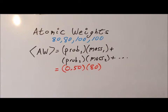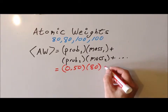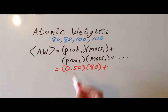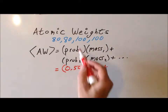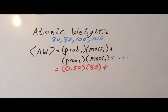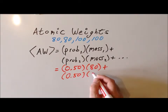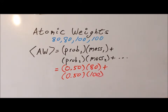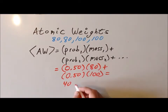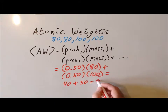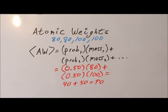Then we would continue this process to the second possible score. Our second possible score is 100. And the probability that a student in this particular exam scored a 100 is also 50%, so we write that as 0.50 times 100. We would notice that we get 40 for the first term plus 50 for the second term, and this gives us an average for the examination of 90. And this is the style of average computation that we're going to use to calculate atomic weights.